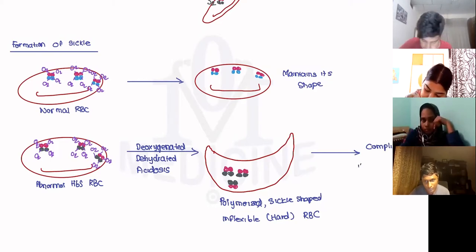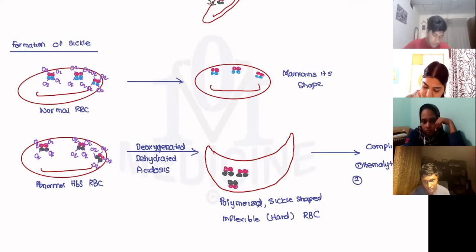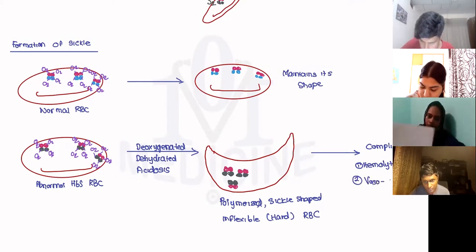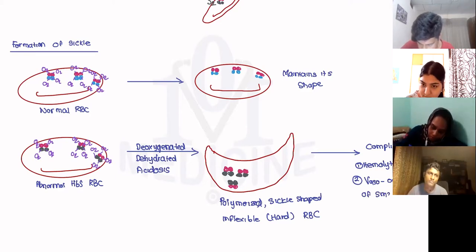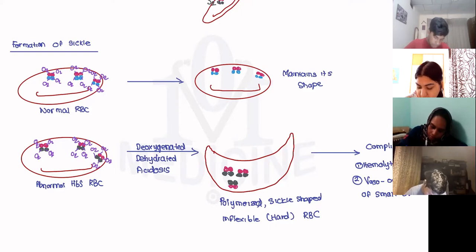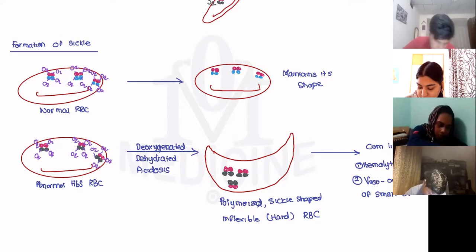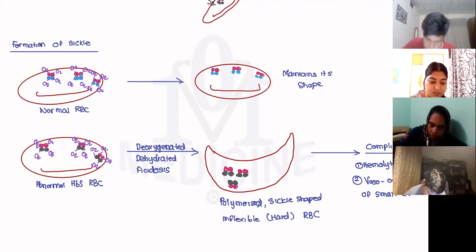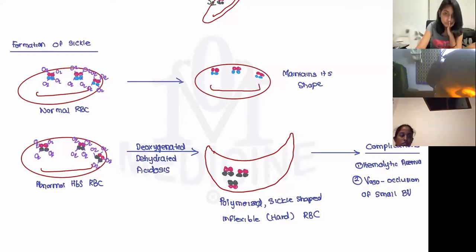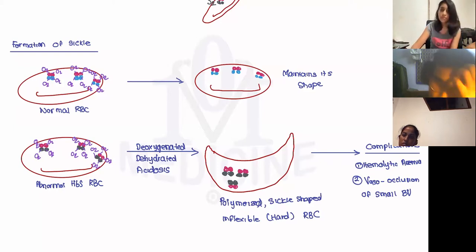Sickling leads to two main complications: hemolytic anemia and vaso-occlusion of small blood vessels. An important distinction — thalassemia only causes hemolytic anemia, while sickle cell anemia causes both hemolytic anemia and vaso-occlusion.